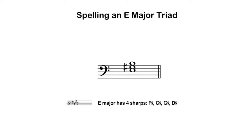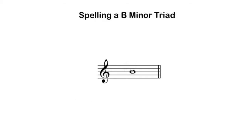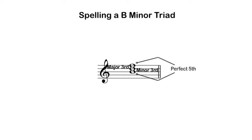Let's try a minor triad. If I were to ask you to spell a B minor triad, I first find my root — the pitch B. I write my third and fifth by stacking thirds above the chord root, so I know I'll need some flavor of D and some flavor of F to complete the triad. The interval structure of a minor triad is minor third, major third, with an aggregate of a perfect fifth between the root and the fifth of the chord.